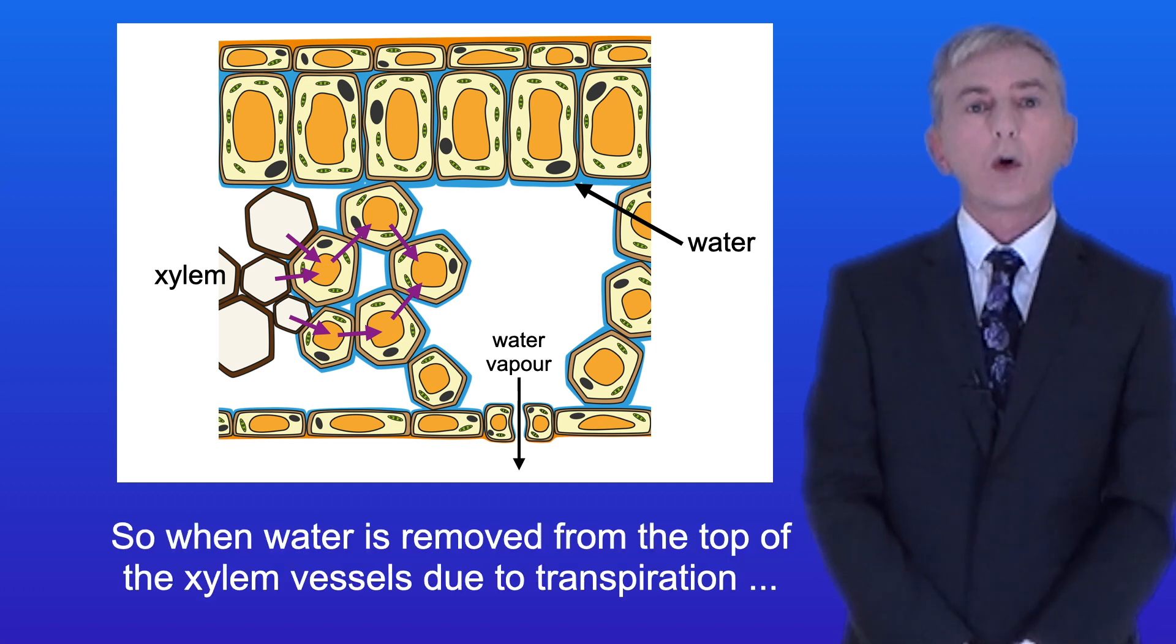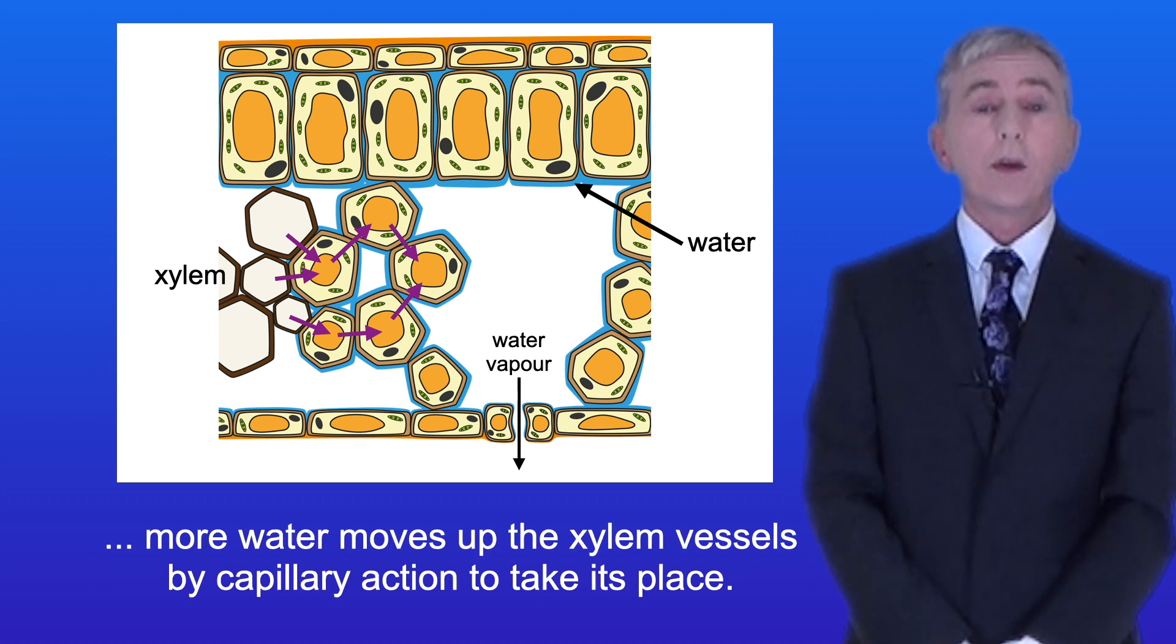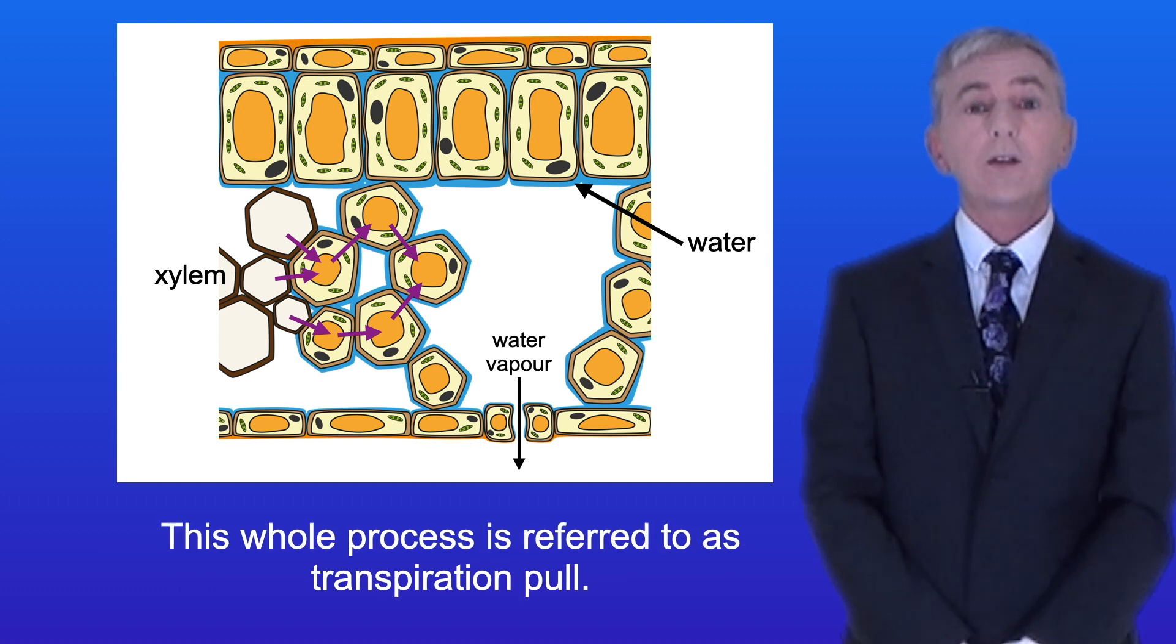So when water is removed from the top of the xylem vessels due to transpiration, more water moves up the xylem vessels by capillary action to take its place and this whole process is referred to as transpiration pull.